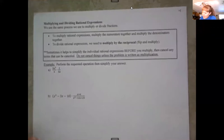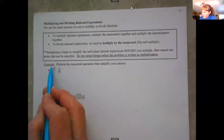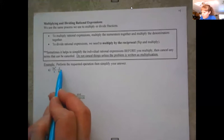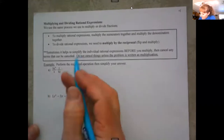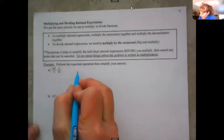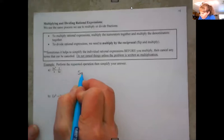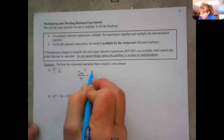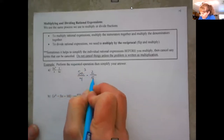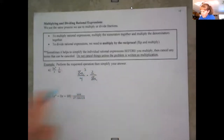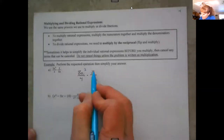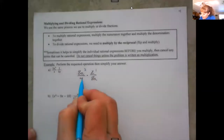Anything in the numerator — going back to your basic math — anything in the numerator can reduce with anything in the denominator. I'm going to rewrite it so it's a bit larger. The fives cancel. Again, this is all multiplication, you can just start canceling. The 2 goes into here once, 2 goes into here twice.